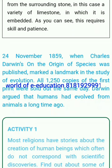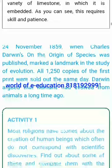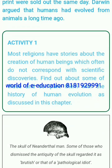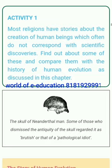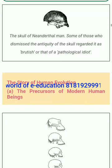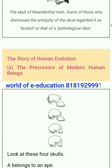On 24th November 1859, when Charles Darwin's On the Origin of Species was published, it marked a landmark in the study of evolution. All 1,250 copies of the first print were sold out the same day. Darwin argued that humans had evolved from animals a long time ago. Activity 1: Most religions have stories about the creation of human beings which often do not correspond with scientific discoveries. Find out about some of these and compare them with the history of human evolution as discussed in this chapter.